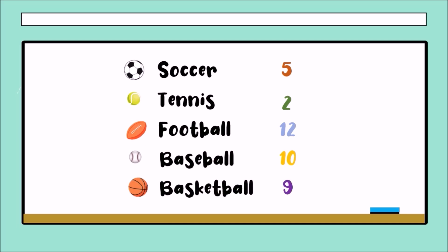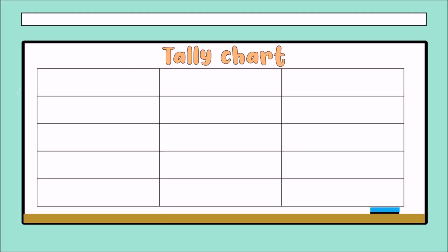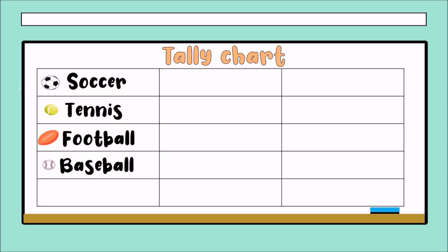I have to organize this information in a specific way. This way is called a tally chart. We have the first column, which is the label — in this case we have soccer, tennis, football, baseball. In the second column we have tally marks. How many students chose soccer? One, two, three, four, and five — this tally mark is drawn in a diagonal way.